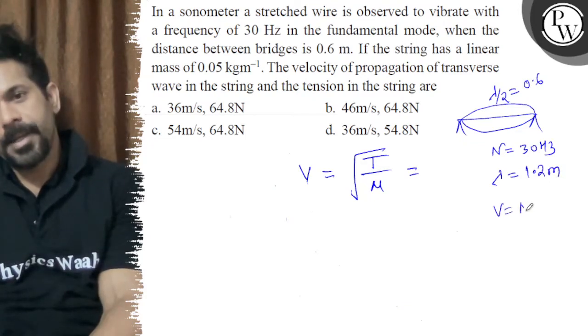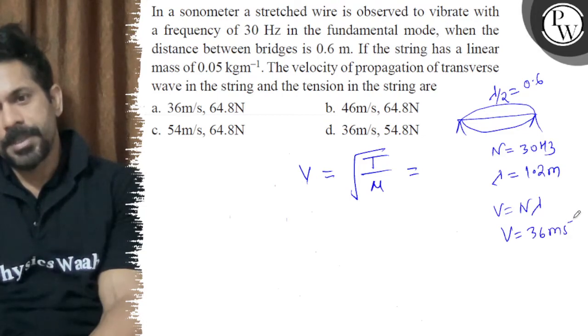And v is equal to n lambda. Velocity is equal to 36 meters per second.